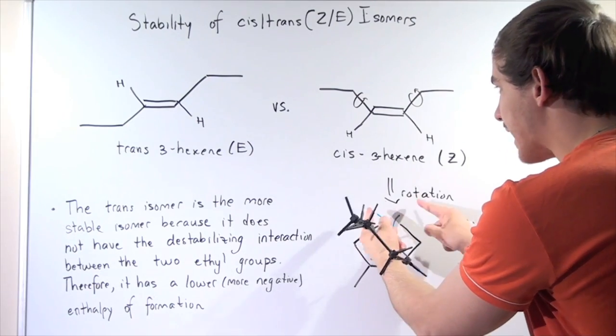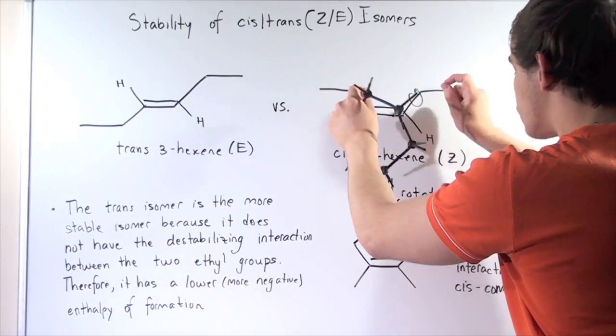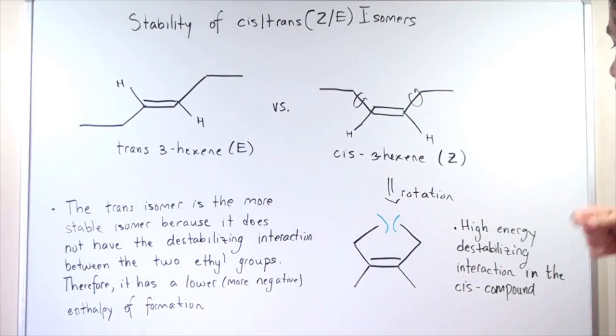There is this bumping effect when these two single bonds rotate, and this creates a high-energy destabilizing interaction in the cis compound.